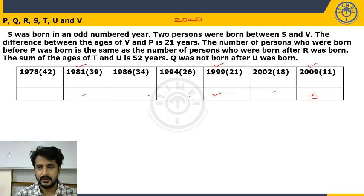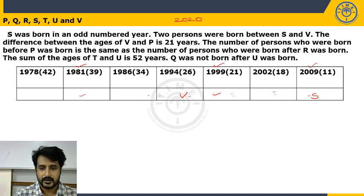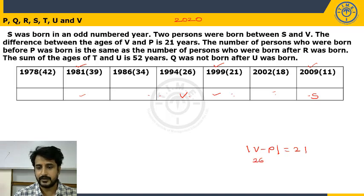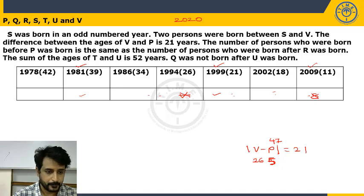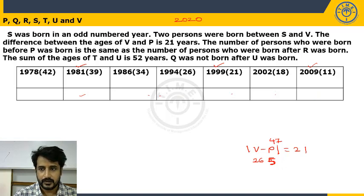Testing S in 2009: V's age = 26 in this case. The difference between ages of V and P must be 21. So P's age would be 26 − 21 = 5 or 26 + 21 = 47. Neither 5 nor 47 exists in our age list. So S cannot be in 2009 — this possibility is ruled out.